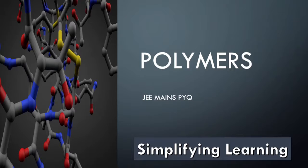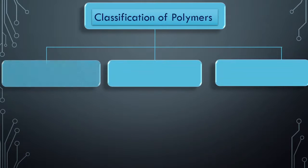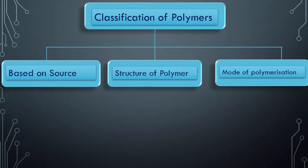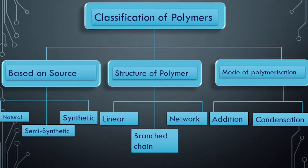We will summarize the entire chapter in a very different way, which I followed during my preparation. This is the classification of polymers, which is based on source, structure of polymer, and mode of polymerization. On the basis of source it can be natural, semisynthetic, or synthetic. On the basis of structure: linear, branched chain, or networked polymer. And on the mode of polymerization, which is very important: addition and condensation polymerization.